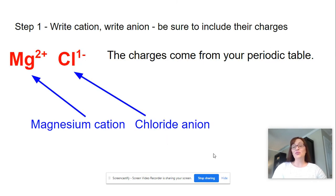Step one is you're going to write the cation. The cation is usually the metal, and they're going to be found on the left-hand side of your periodic table, and so our ion here is magnesium.